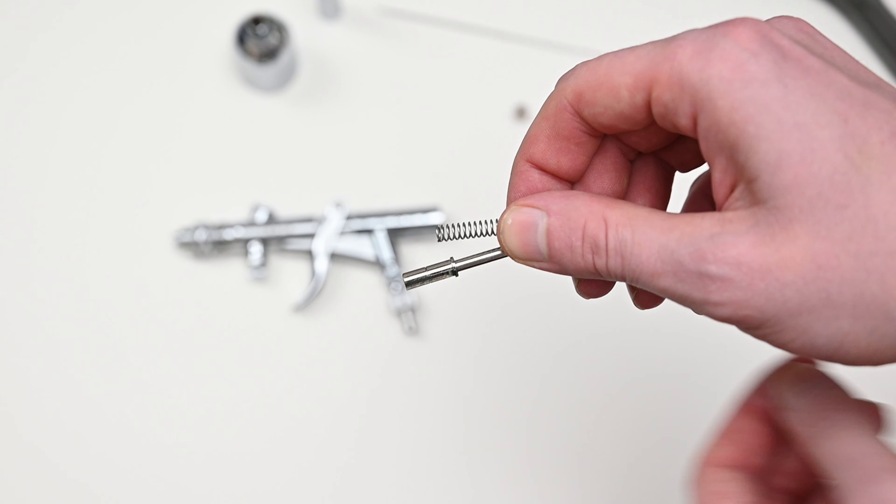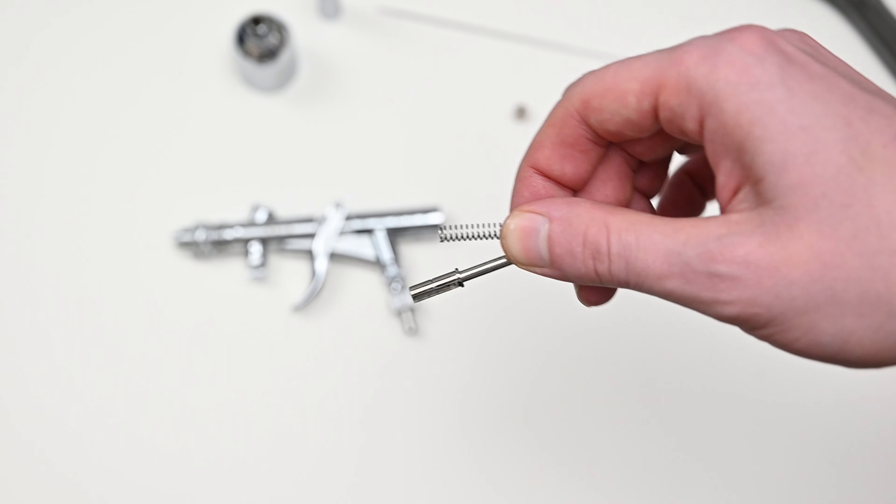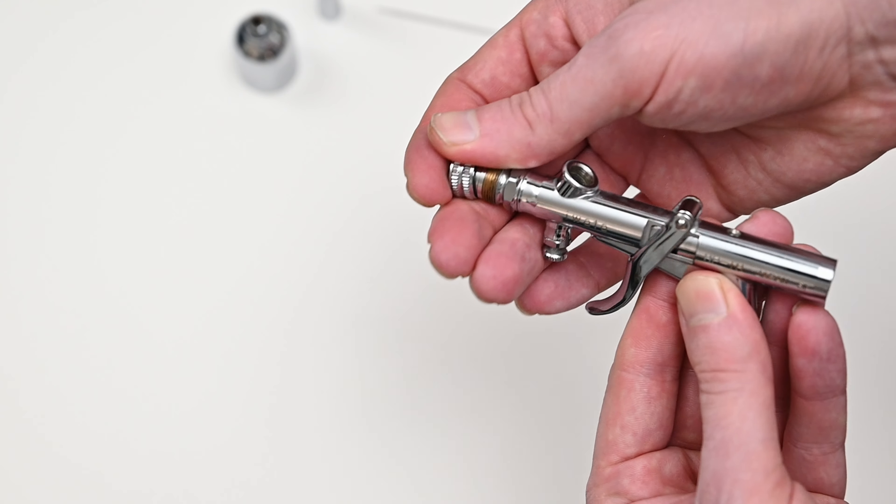This spring guide assembly consists of two parts, the guide and the spring, and it feels very solid and well built. One thing that I appreciate about Iwata airbrushes is that they never seem to cheap out on even the smallest parts.